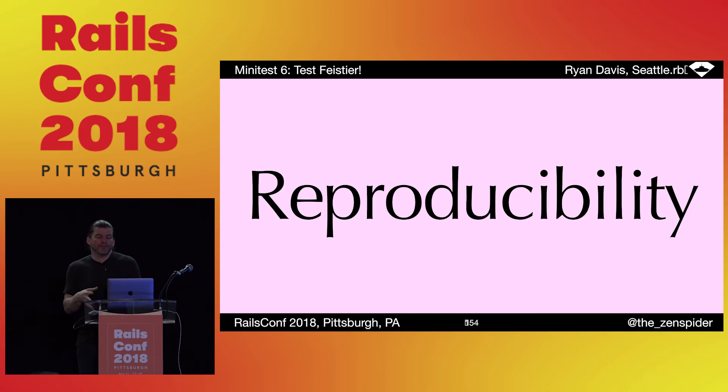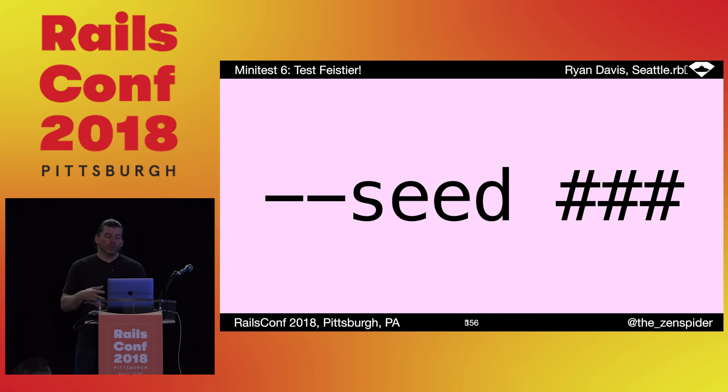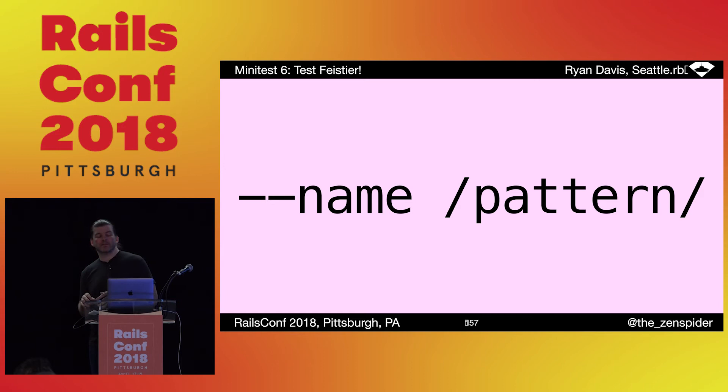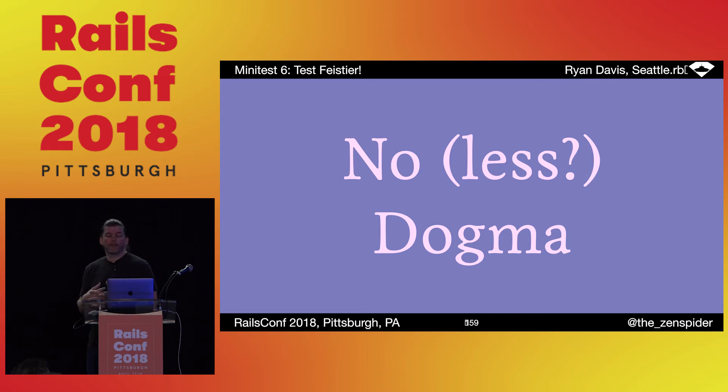Reproducibility. Minitest is pretty much just a fancy tool to reproducibly run things — all it does is call methods. In testing, reproducibility is paramount. Without it, there's really no point in doing any of this stuff at all. Running with a fixed seed should always reproduce the output, allowing you to see the failures again in the same order. Being able to selectively run failures allows you to reduce the problem set to a minimal reproduction. And if you really have to, you can declare that your tests need to run in order.